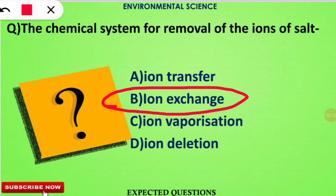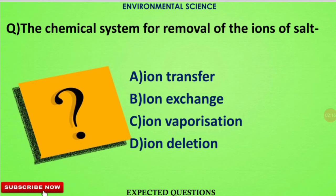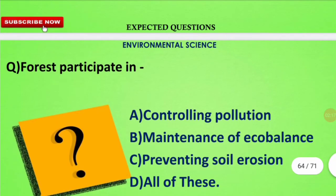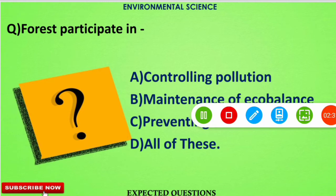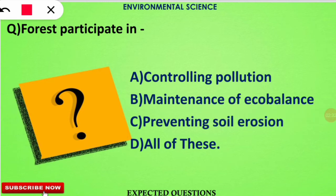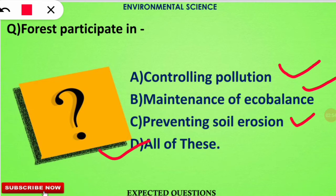The next question asks: forest participates in which of the following processes? The correct option is D. Forest participates in controlling pollution, maintaining ecological balance, as well as preventing soil erosion, so option D is correct.